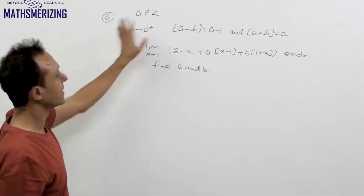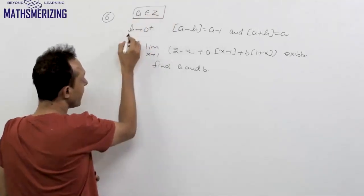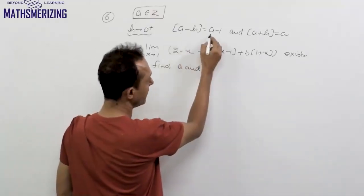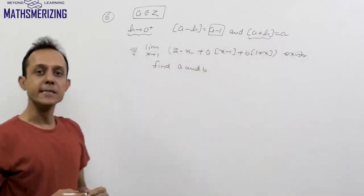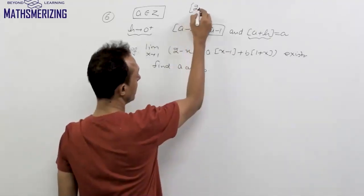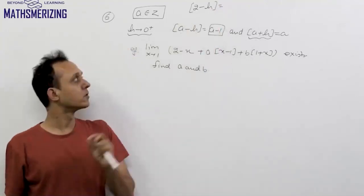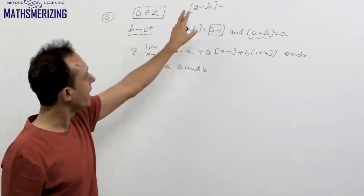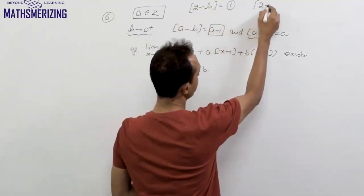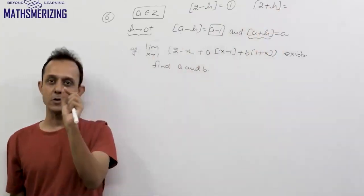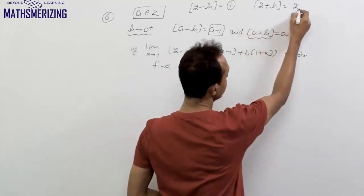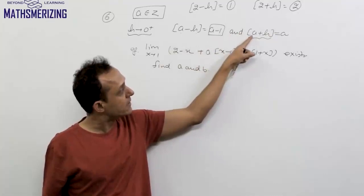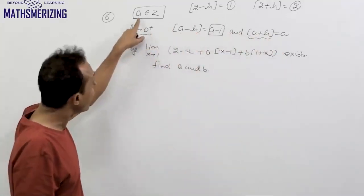The sixth property of the greatest integer function relates to limits. If a is an integer and h is a very small positive number nearly equal to 0, then GIF(a minus h) = a minus 1, and GIF(a plus h) = a. For example, GIF(2 minus 0.0001) = GIF(1.9999) = 1, while GIF(2 plus 0.0001) = GIF(2.0001) = 2.